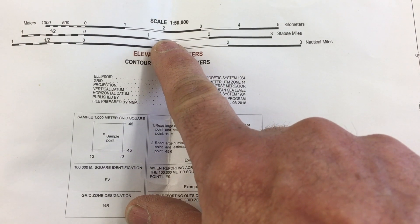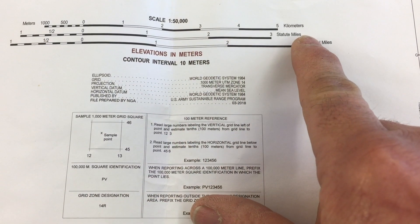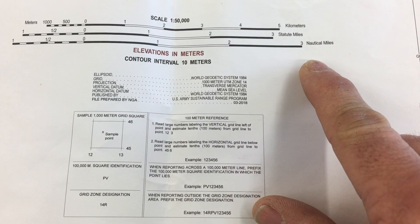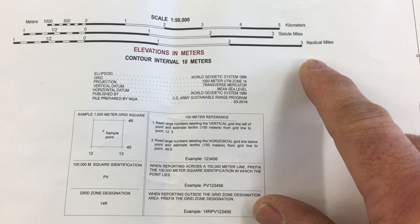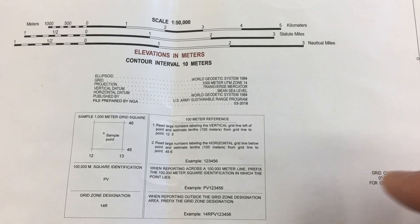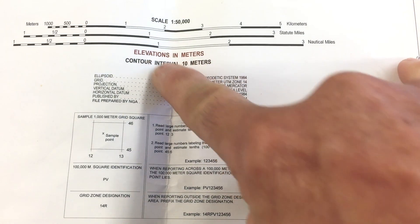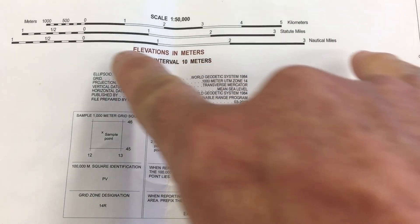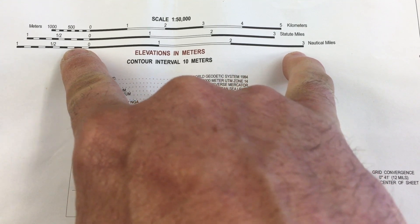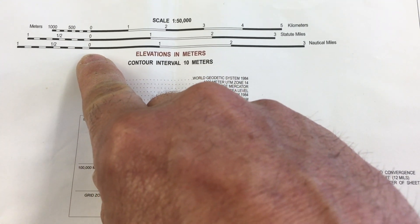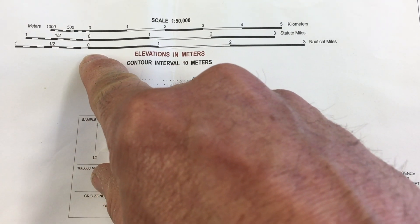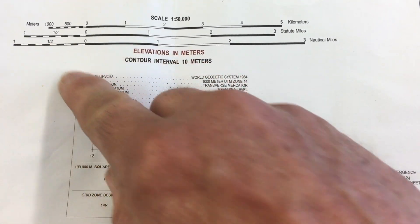Here we have our scales so we can determine kilometers, statute miles, and nautical miles. Whether you're using a sheet of paper, a string, or however you want to measure a distance on a map, you bring it back down here to determine how far it is. The scale shifts to the left of zero because it breaks distance down into increments of 10.